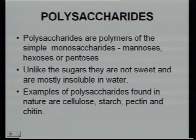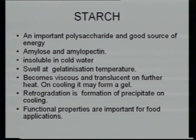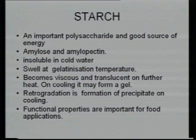Polysaccharides are polymers of simple monosaccharides — many molecules of monosaccharides such as mannose, hexose, and pentose. Their characteristics are that they are not sweet and are insoluble in water. Examples of polysaccharides are starch and pectin. Starch consists of amylose and amylopectin — amylose is a straight chain molecule whereas amylopectin is a branched molecule. Starch is insoluble in cold water.